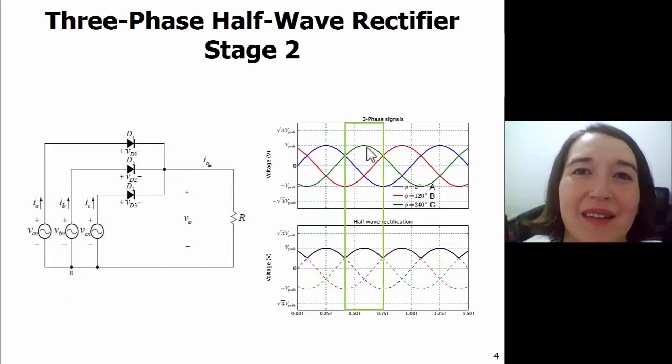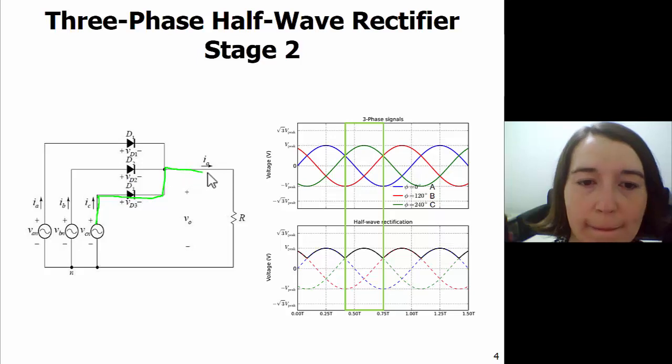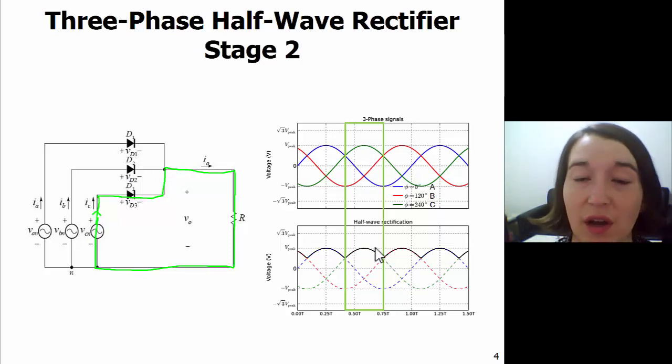Now we'll look at stage 2, and this is where C, the green, becomes the highest voltage, so from here to here, and A and B are both lower voltages. So since C is the highest, the current will go through C, through diode 3, through the load, and back around to complete the circuit. And you can see at the output, we see just that highest voltage coming through.